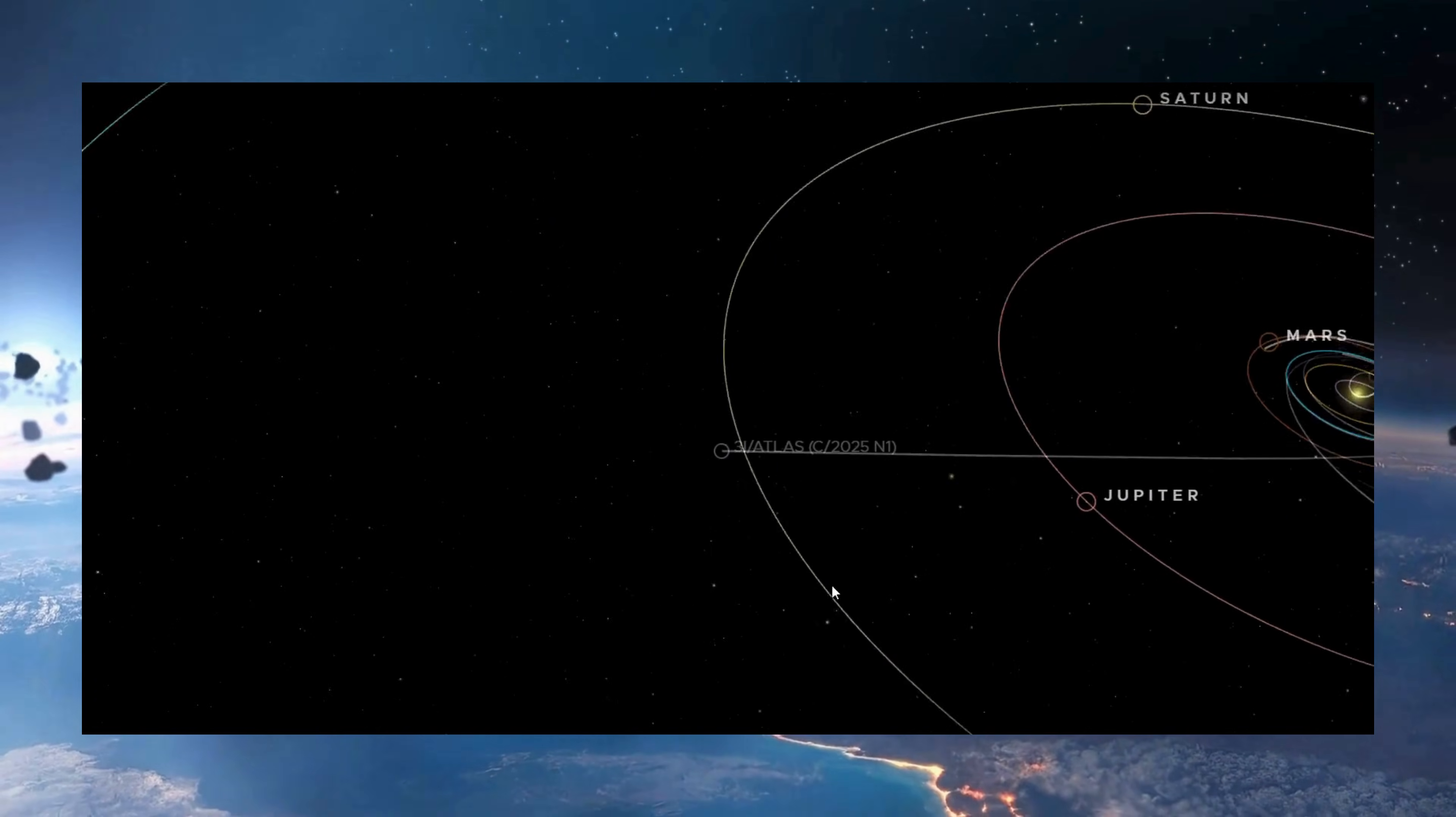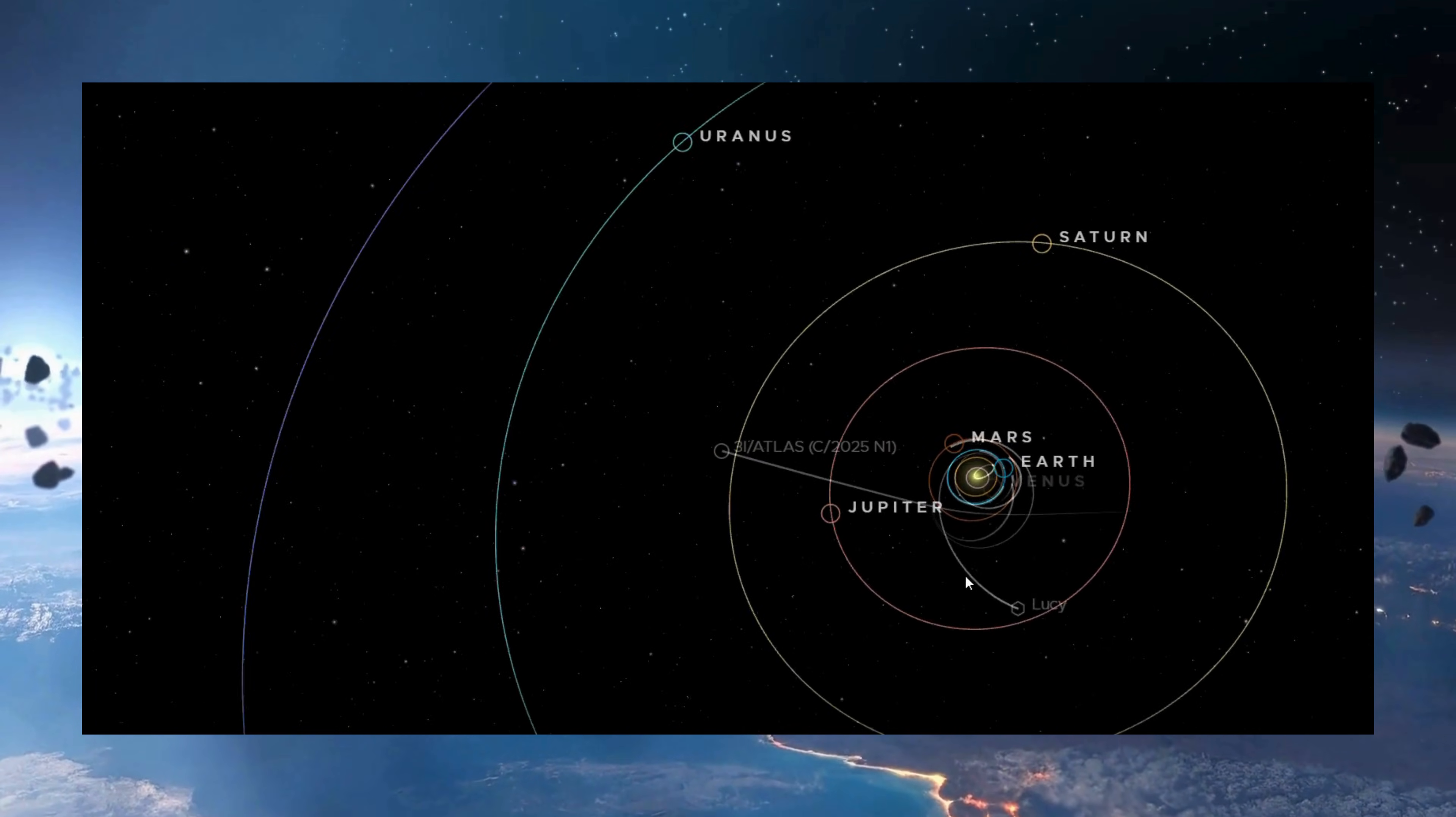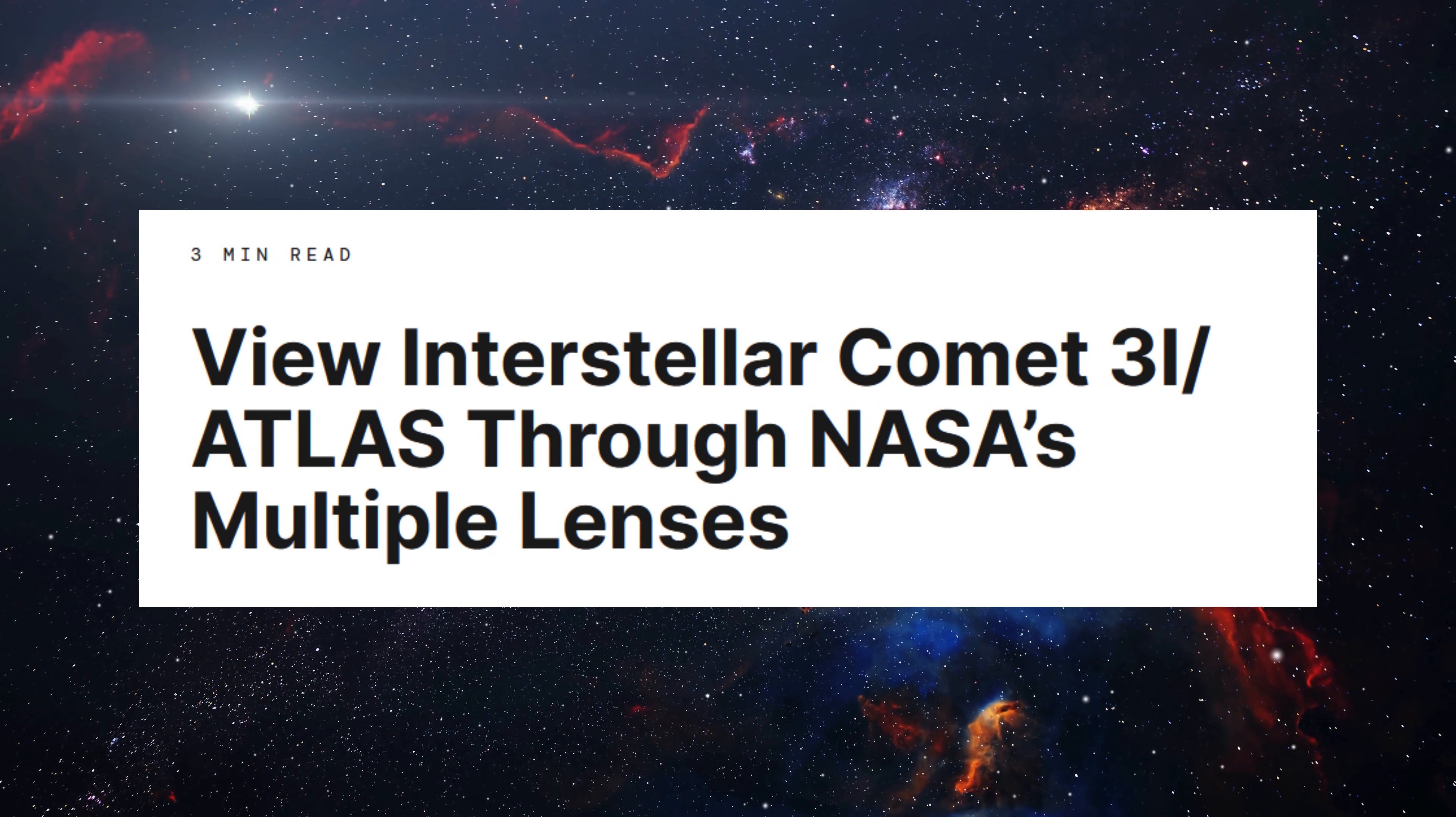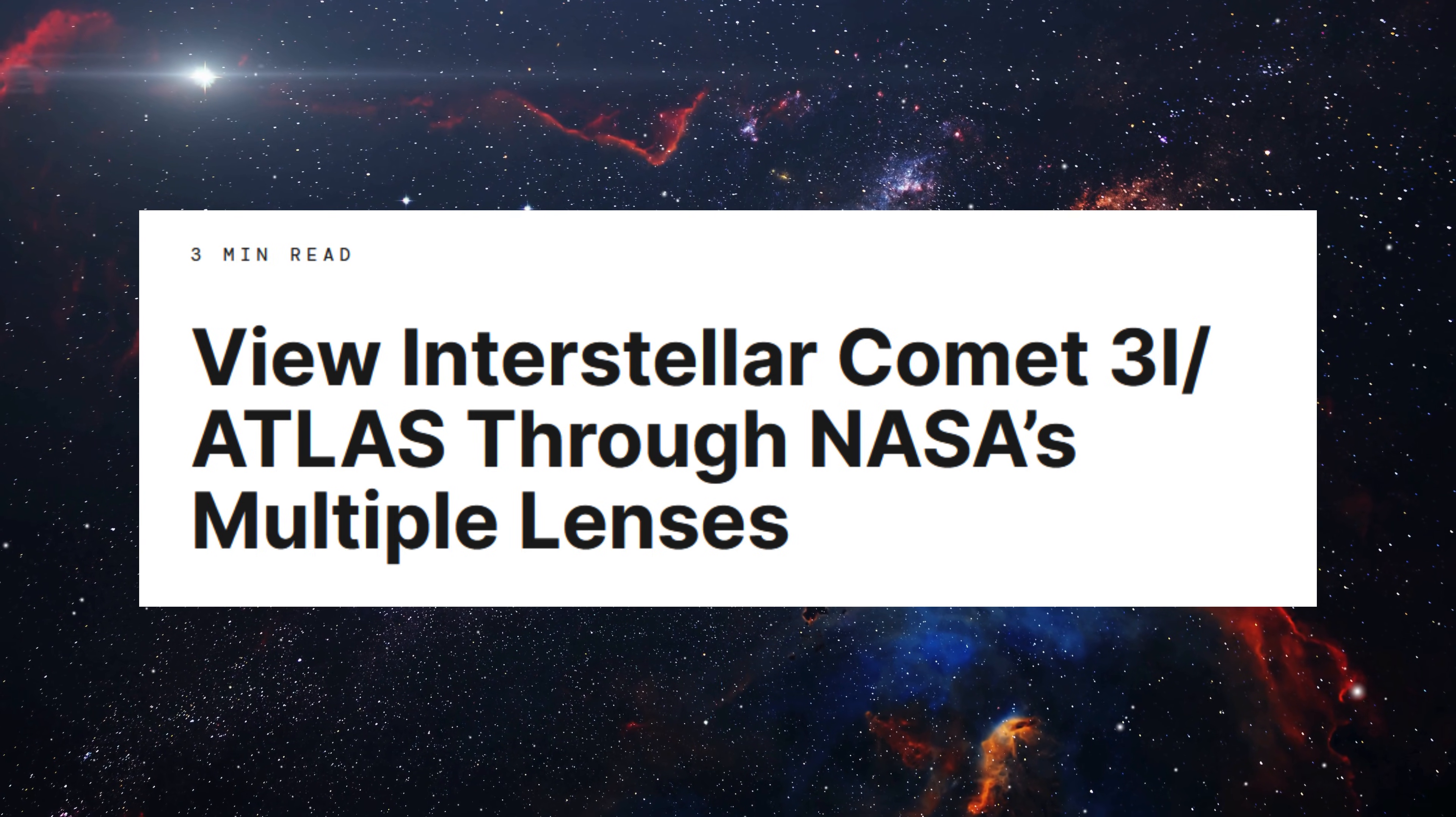Because earlier this year, from May through September, a completely different picture emerged. During that 5-month period, 3i/ATLAS was tracked relentlessly by more than 230 observatories worldwide. These weren't casual observations, either.